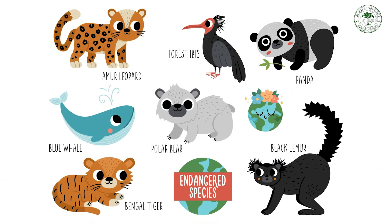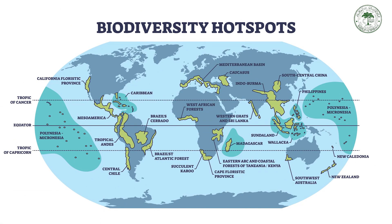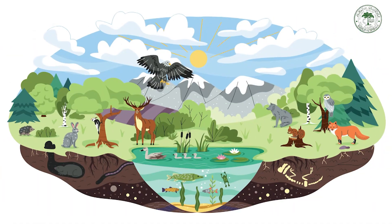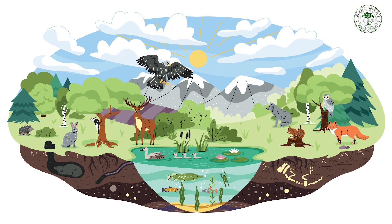Effective management of endangered species and biodiversity hotspots is essential for maintaining ecosystem stability and preventing species extinction. Awareness of threats to biodiversity such as habitat loss and pollution — overall, these topics are vital for fostering ecological literacy and guiding conservation efforts to ensure sustainability of life on Earth.